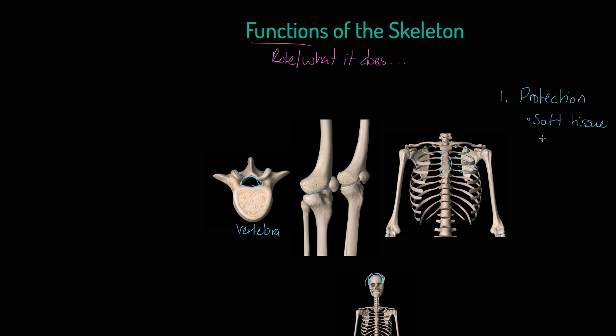So examples here. We've got cranium that protects the brain. We've got the ribs that protect the soft tissue of the chest. And let me mention it as the vertebrae, the multiple vertebrae, which protect, of course, the spinal cord.